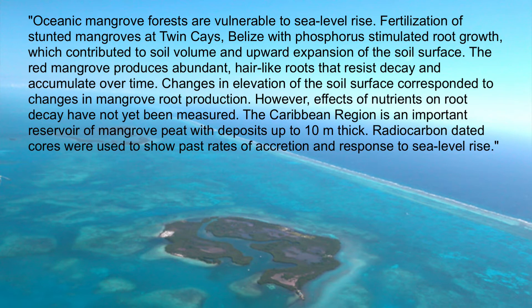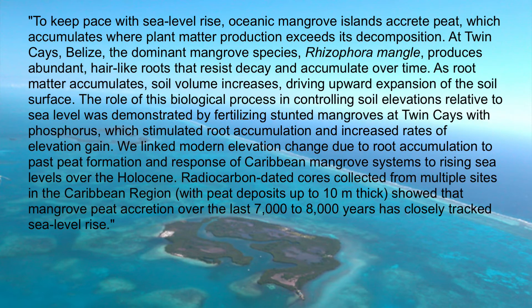One way to fix this narrative is to develop a story arc in which the information is presented in a logical sequence to the reader. Again, pause the video and read the revised narrative. In this improved version, we are told a more coherent story about this mangrove ecosystem and how it keeps pace with rising sea level. The stage is first set by describing in general terms the processes of interest and the study site in Belize. The first sentence tells us the theme: sea level rise and peat accumulation.